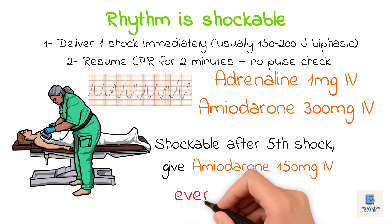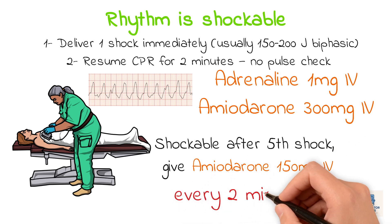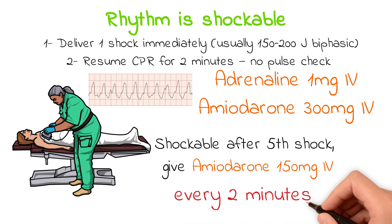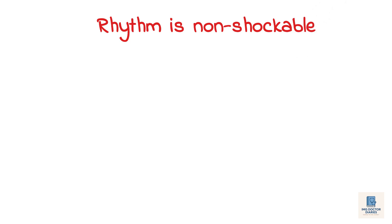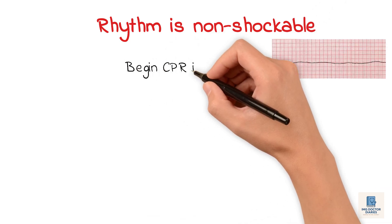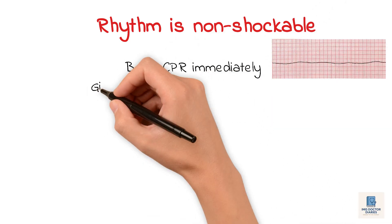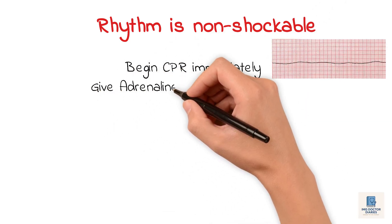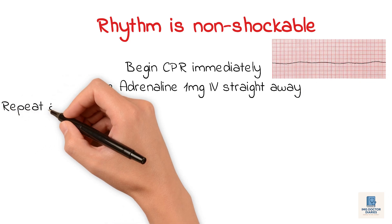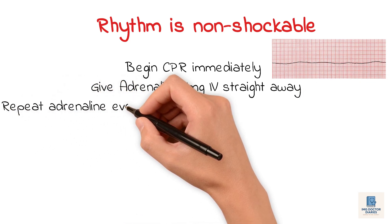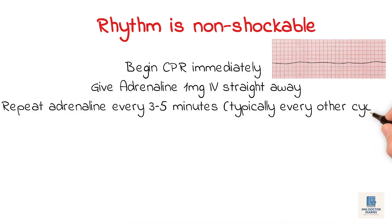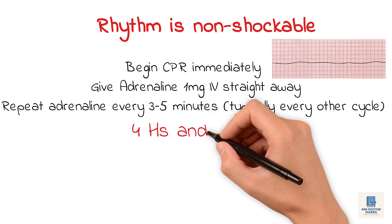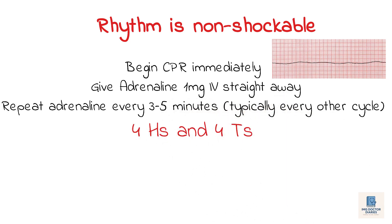Continue cycles of CPR and rhythm checks every two minutes. If the rhythm is non-shockable, like PEA or asystole, begin CPR immediately. Give adrenaline 1 mg IV straight away, and repeat adrenaline every 3 to 5 minutes, typically every other cycle. While continuing CPR, always consider reversible causes — the 4 H's and 4 T's.